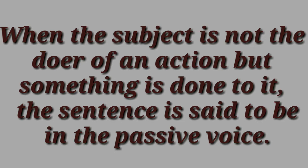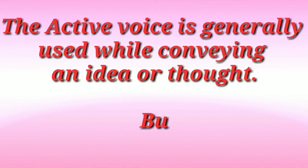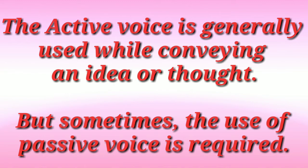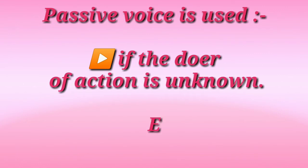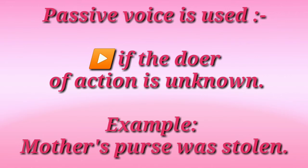Only sentences with a transitive verb — that means a verb with an object — can be changed. The active voice is generally used while conveying an idea or thought, but sometimes the use of passive voice is required. We use passive voice if the doer of the action is unknown. For example: 'Mother's purse was stolen.' Here, who stole the purse is not known, so this sentence is used in passive voice.